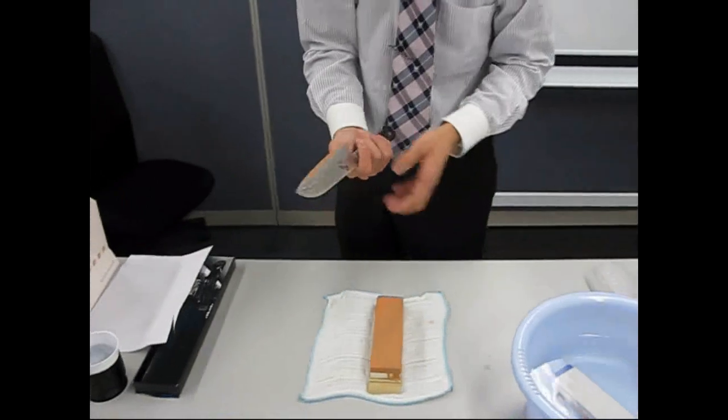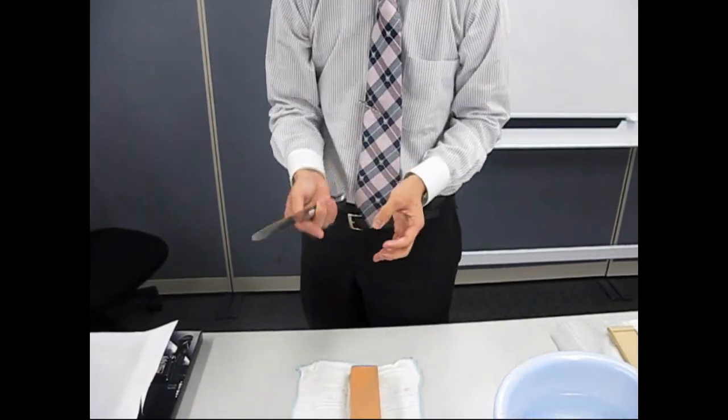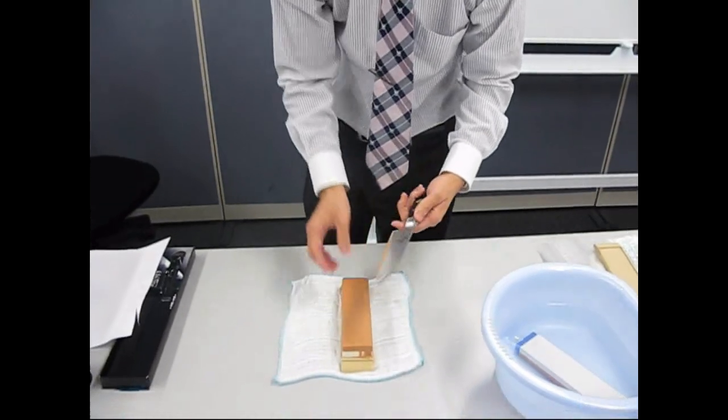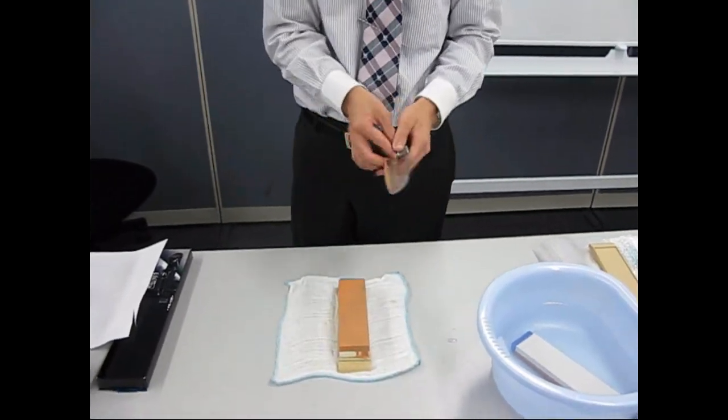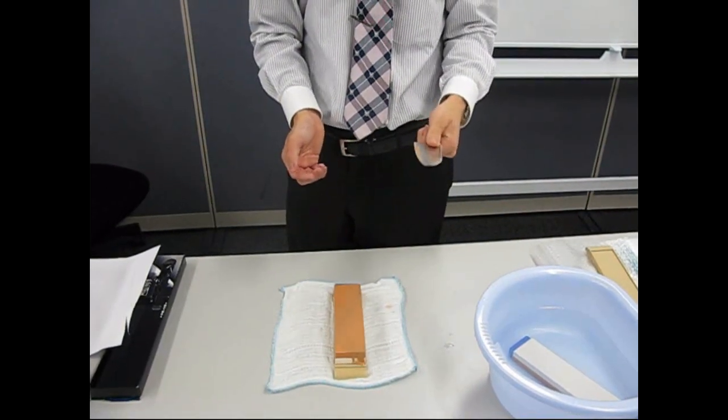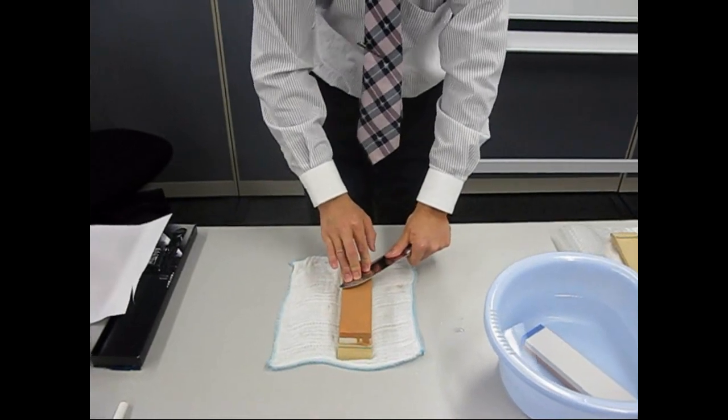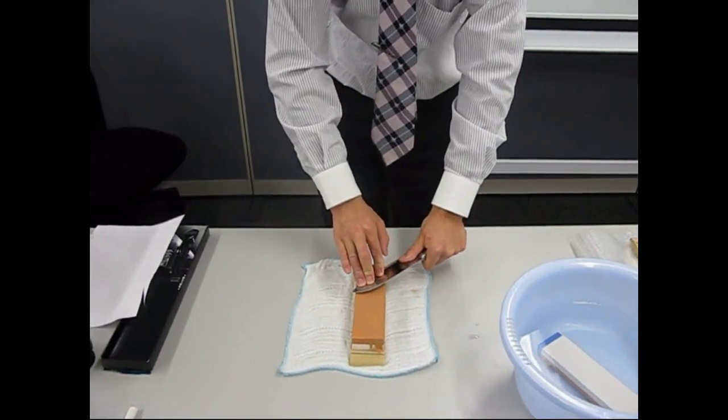Grind the kitchen knife until the blade has a burr, and then turn the blade over and hold with your left hand, and support the blade area with your thumb. Then grind the kitchen knife with the same process as with your right hand.